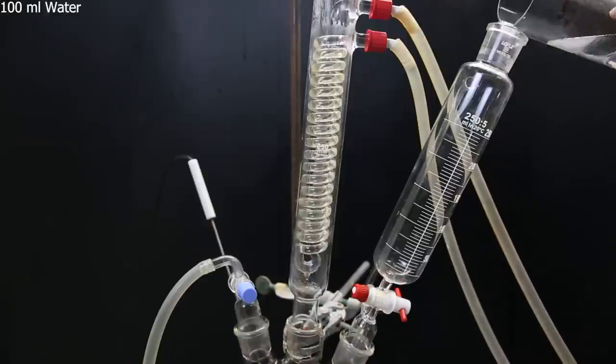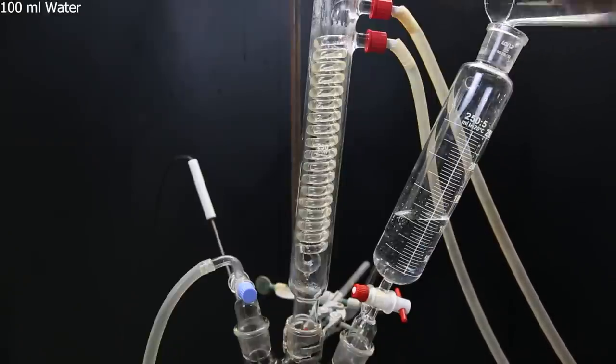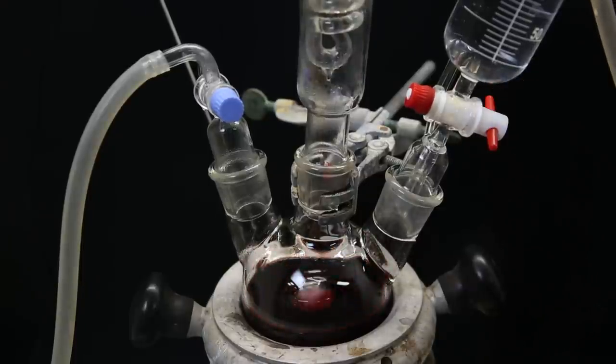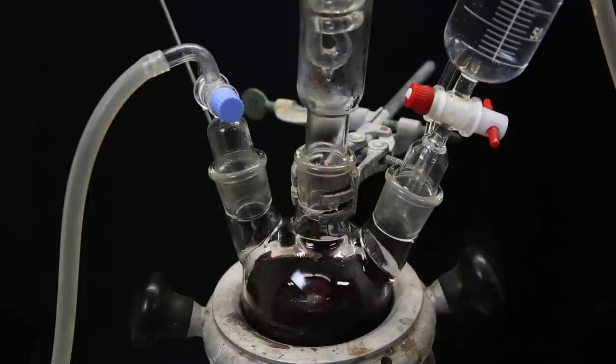I then open the dropping funnel, and add in 100ml of water. I add the water to the flask, to destroy any remaining phenylmagnesium bromide. There is a slight exotherm at the beginning, but not more after that.